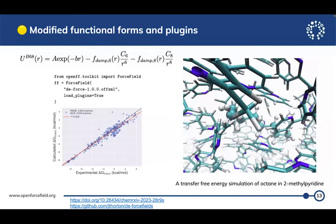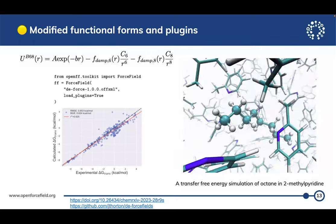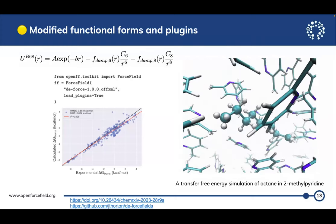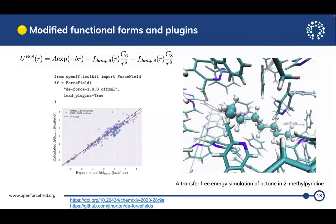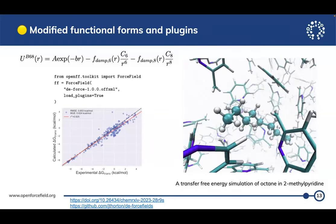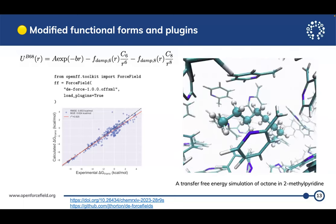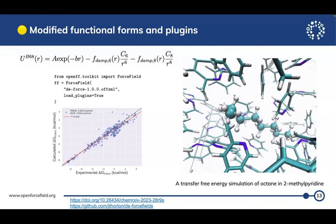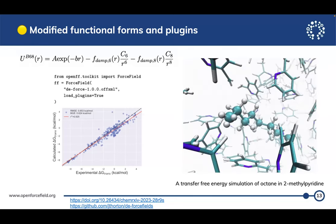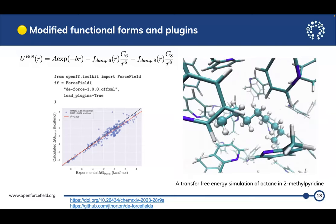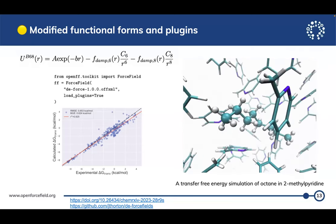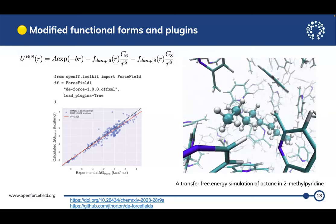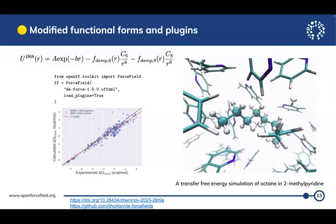We can also modify functional forms. We have a repository called Smirnoff Plugins that has handlers for modified and non-standard OpenFF XMLs — this is what our research team uses a lot. Here's an example using octane and 2-methylpyridine as part of a hydration or mixture solvation free energy calculation. As you can see, this is using a double-exponential non-bonded form — not Lennard-Jones. You can follow Jock Horton's repository to see how to get running with an alternative functional form.